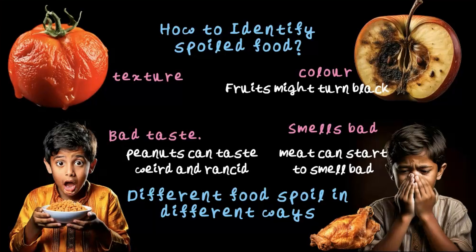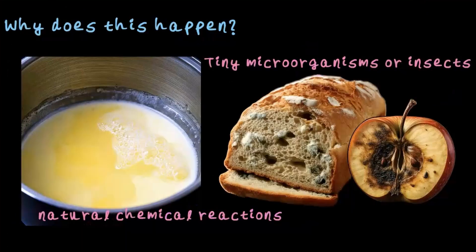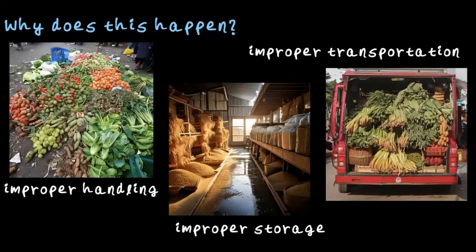We also explored why food gets spoiled, which can happen due to natural chemical reactions in the food, tiny microorganisms or insects attacking the food, improper handling, improper storage, and improper transportation of food, vegetables, and fruits. With that fresh in mind, let's continue.